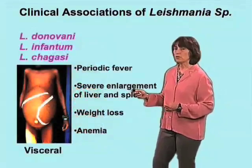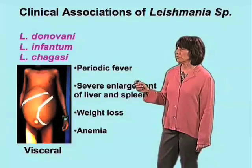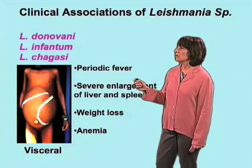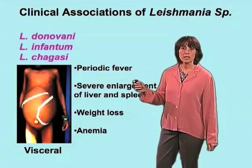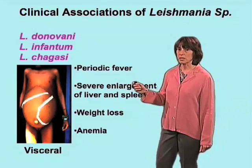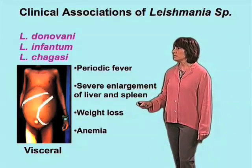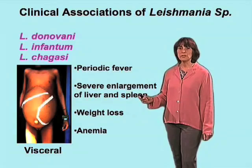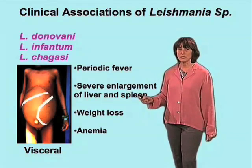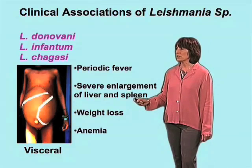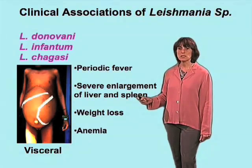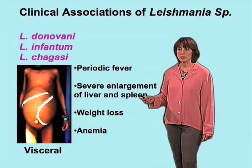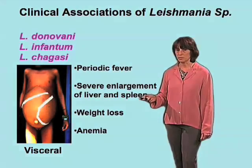The most severe form of Leishmaniasis is by far the visceral form, which is caused by three species — mostly Leishmania donovani, Leishmania infantum, and Leishmania shagazi. This disease is characterized by periodic fever, severe enlargement of the liver and the spleen, and also weight loss and anemia. This is a significant cause of morbidity and mortality in the endemic areas for visceral leishmaniasis.